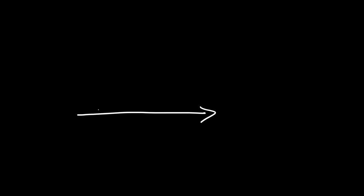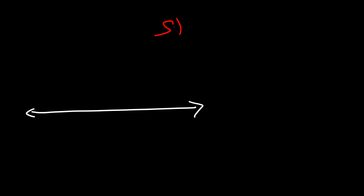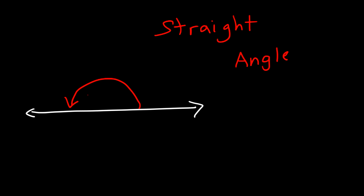The next angle you need to be familiar with is an obtuse angle. An obtuse angle is a relatively large angle — greater than 90 but less than 180. And finally, a straight angle is basically the angle of a straight line, and a straight line always has a measure of 180 degrees.